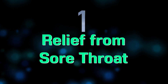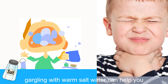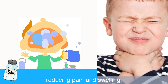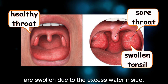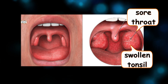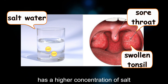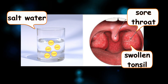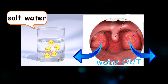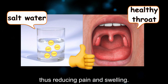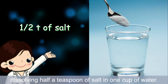Number one: relief from sore throat. In case you have a sore throat, gargling with warm salt water can help you reduce the pain and swelling. This is because cells and tissues surrounding the throat are swollen due to excess water inside. The salt water used for gargling has a higher concentration of salt than the cells of the throat, so water molecules move from the swollen cells of the throat to the salt water, thus reducing pain and swelling. Doctors generally recommend dissolving half a teaspoon of salt in one cup of water.